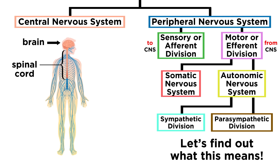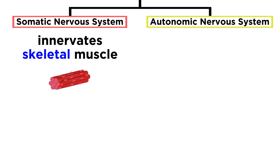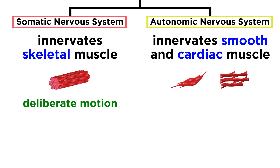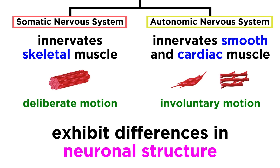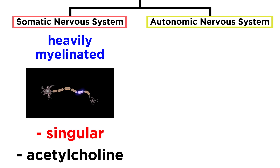While the somatic nervous system innervates skeletal muscle to generate deliberate motion, the autonomic nervous system innervates smooth muscle and cardiac muscle to generate involuntary motions. There are differences in neuronal structure as well. For the somatic, axons are heavily myelinated and singular, releasing acetylcholine.